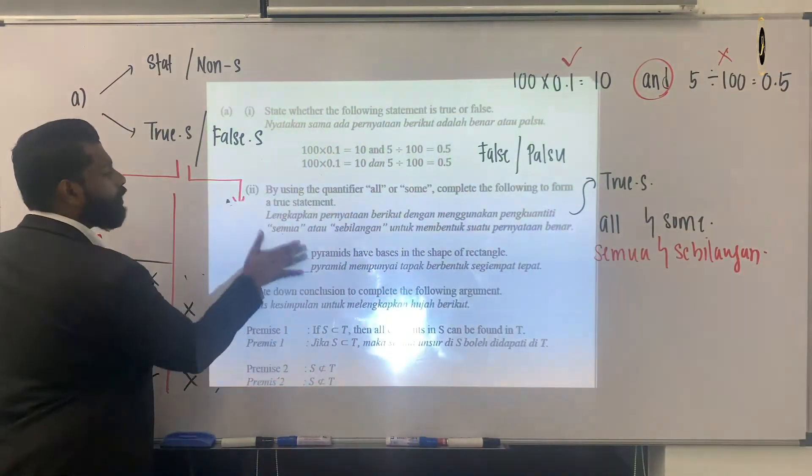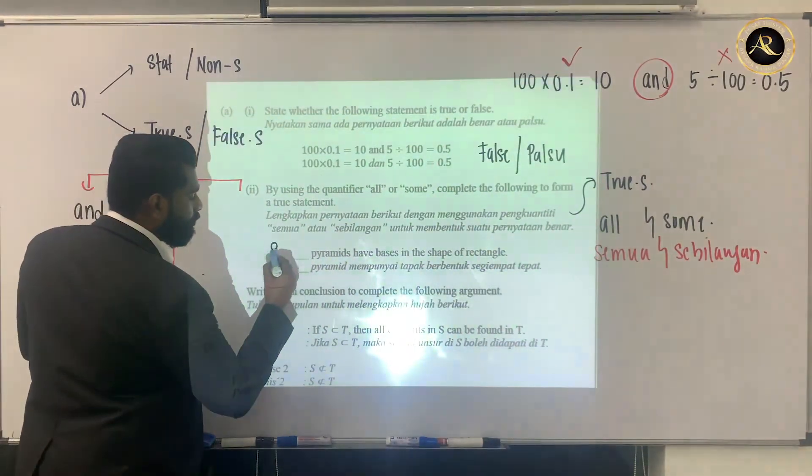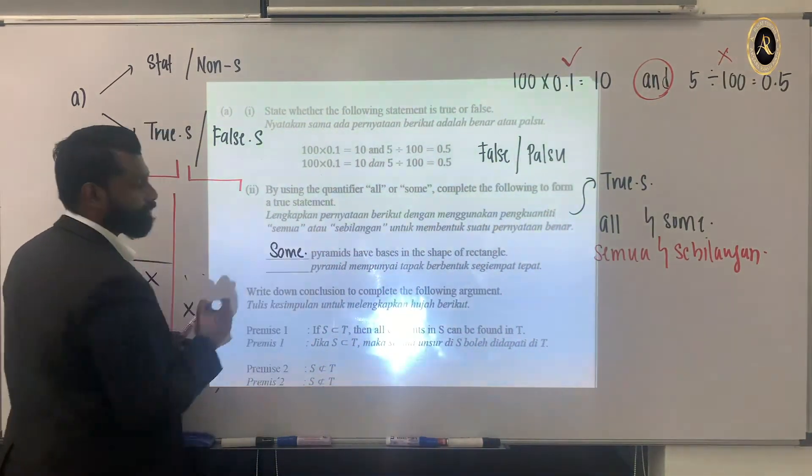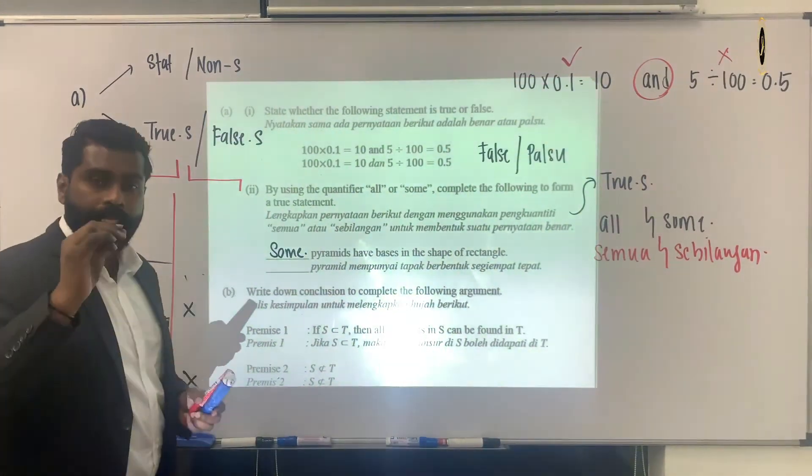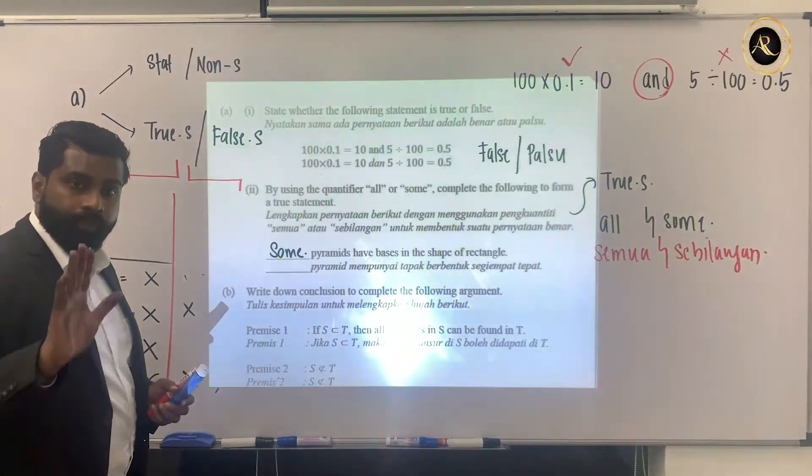So it's not 'all', it's going to be 'some'. So the question will be filled in with 'some'. In Bahasa Melayu we call it 'sebilangan'. Are you clear? Any questions?